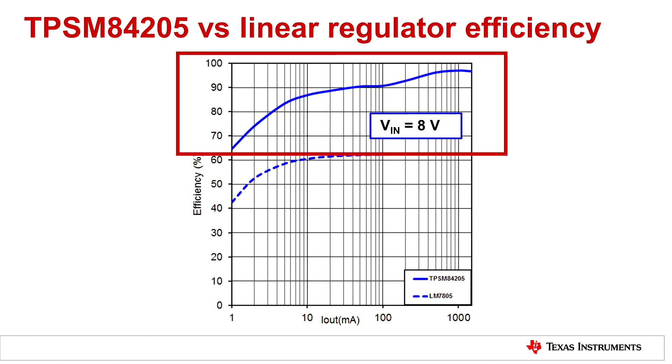As you see, the TPSM 84205 has much better efficiency than the linear regulator.